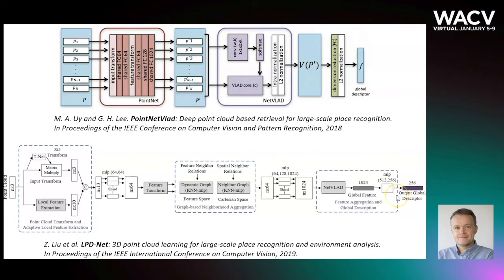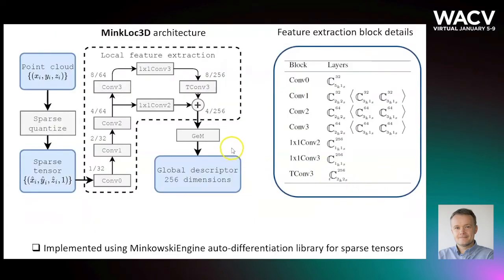LPDNet surpasses previous state-of-the-art by a large margin, however at the expense of architectural and computational complexity. This increasing complexity motivated us to investigate the feasibility of using an alternative approach. We chose sparse voxelized representation and sparse 3D convolutions, as recently they proved successful in many 3D vision tasks.